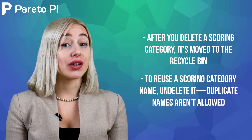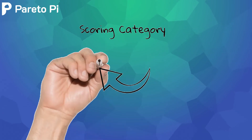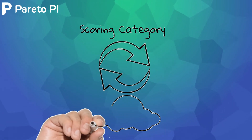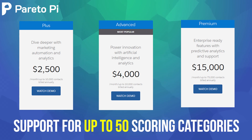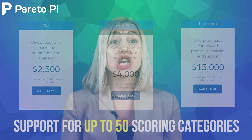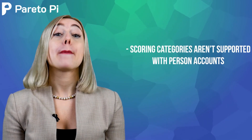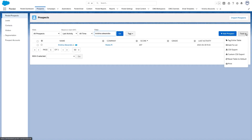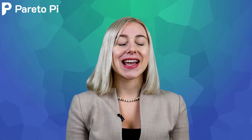To summarize: scoring category updates sync with Salesforce approximately every 15 minutes. Plus and Advanced Enterprise Edition accounts support up to 50 scoring categories. You can't manually edit a category score on prospect records. Scoring categories aren't supported with person accounts in Salesforce. And category scores are included with the full prospect CSV export. Now you know the meaning behind the Pardot score and scoring categories — thank you for tuning in and happy prospect scoring!